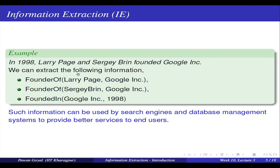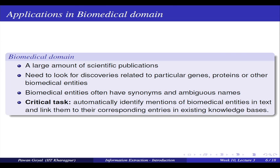Once you have this information it can be used by various search engines and database management systems to provide better services to end users. It is not very trivial to do it directly using the text data, but once you have this in database form you can do a lot of different tasks. One major application is in the biomedical domain, where there are a lot of research papers giving details about experiments, patients, findings, drugs that work or did not work, clinical trials, and patents.